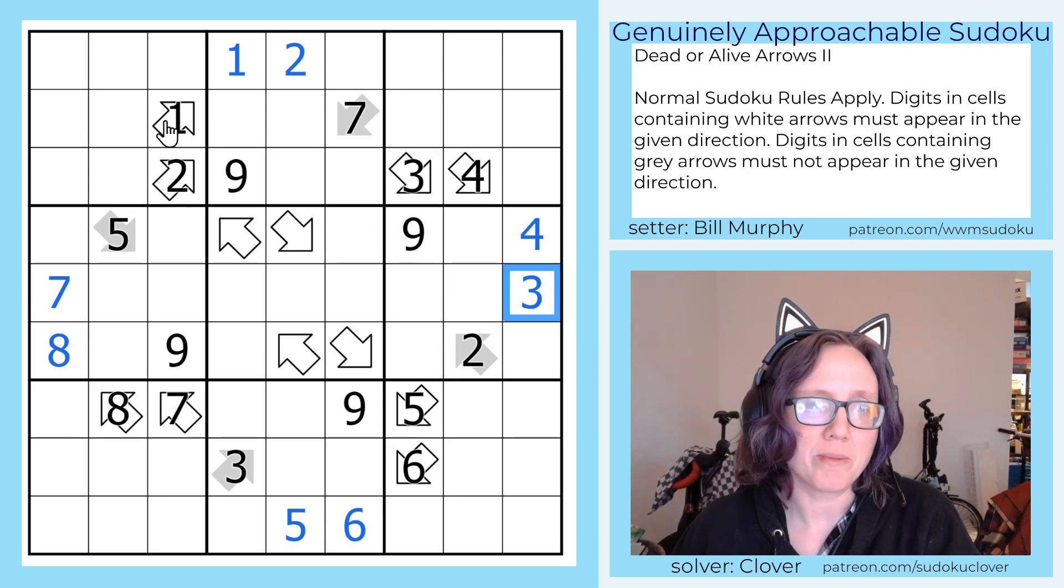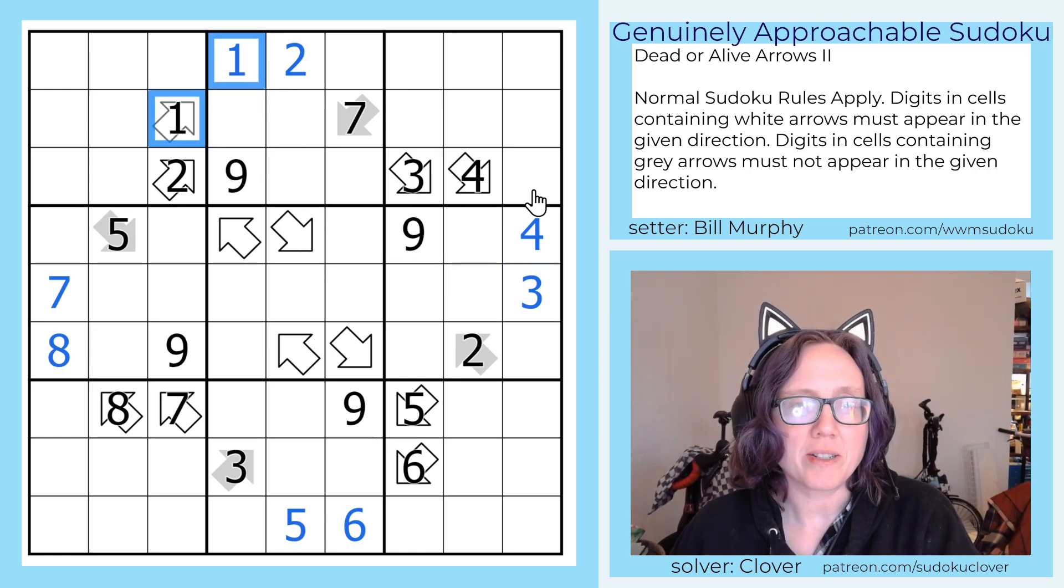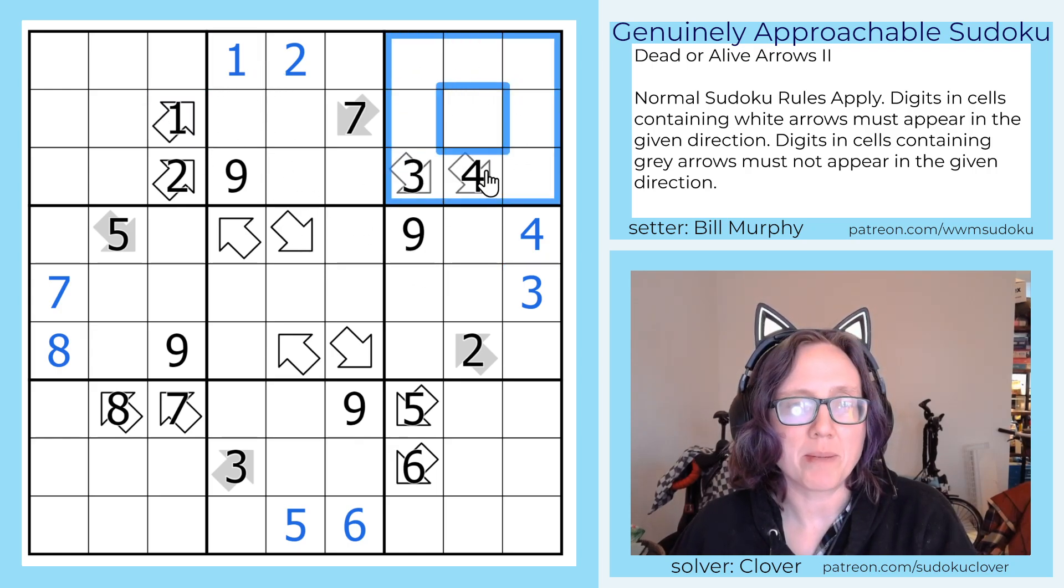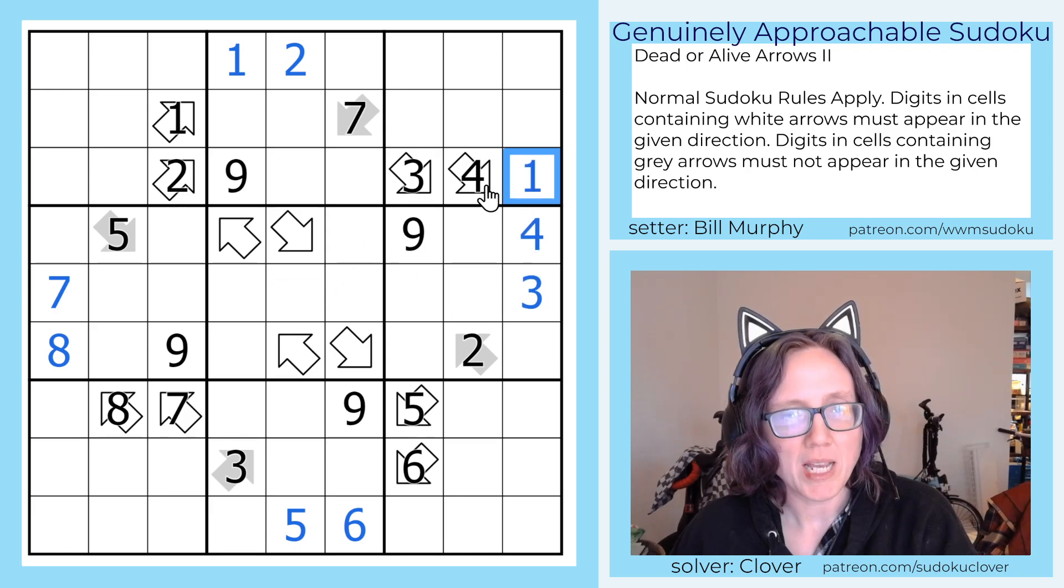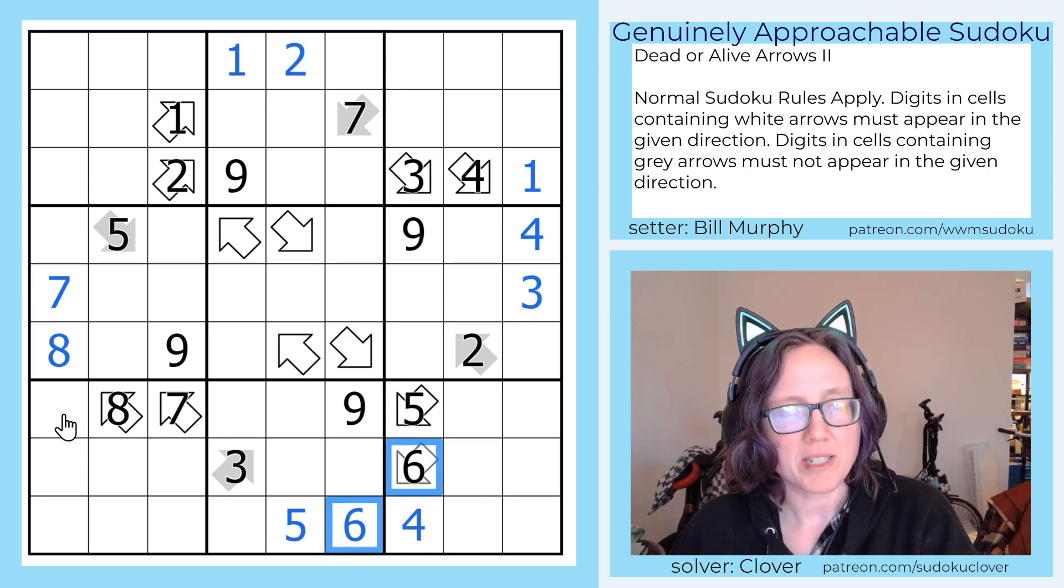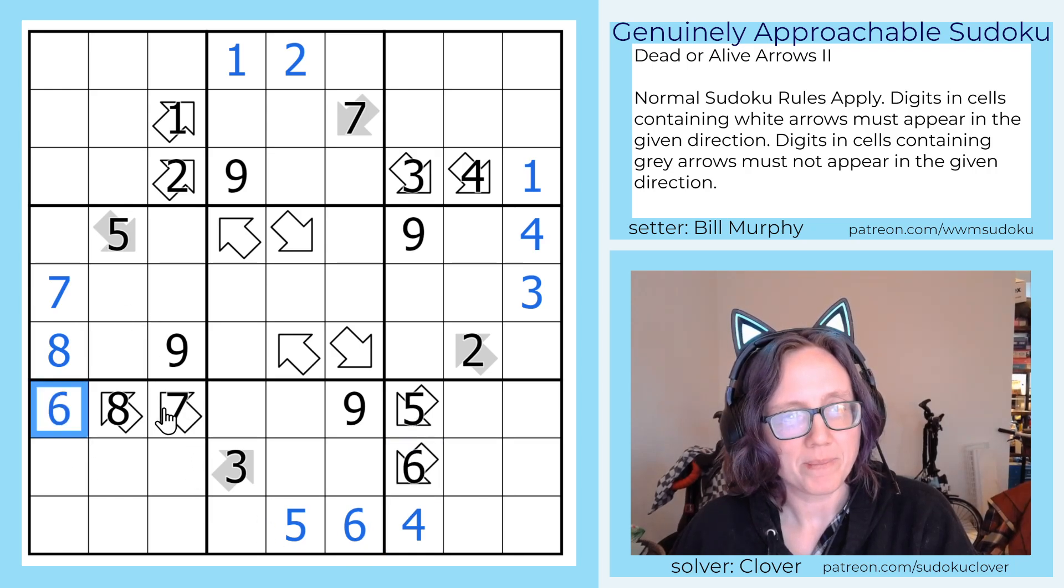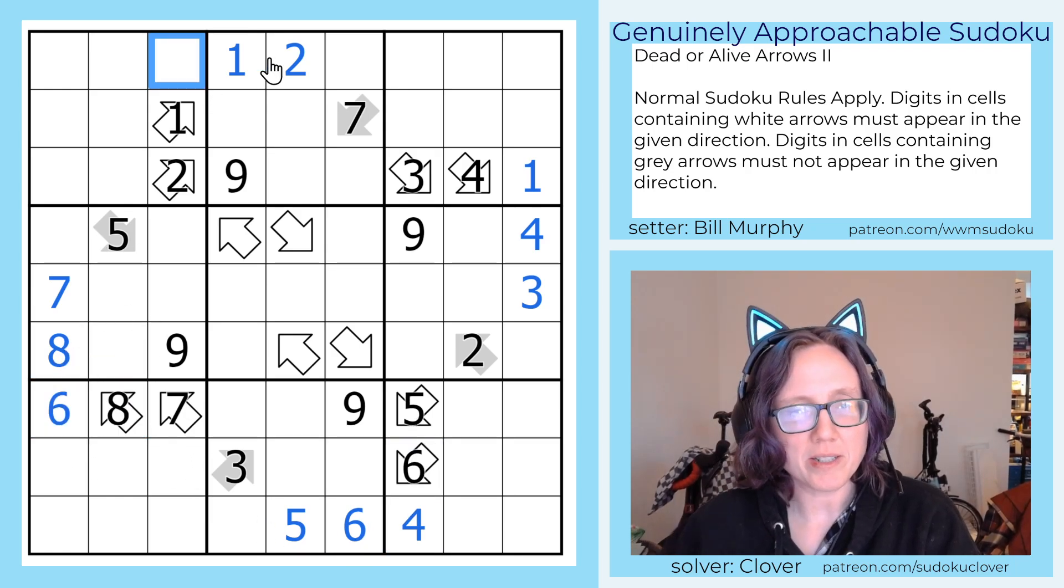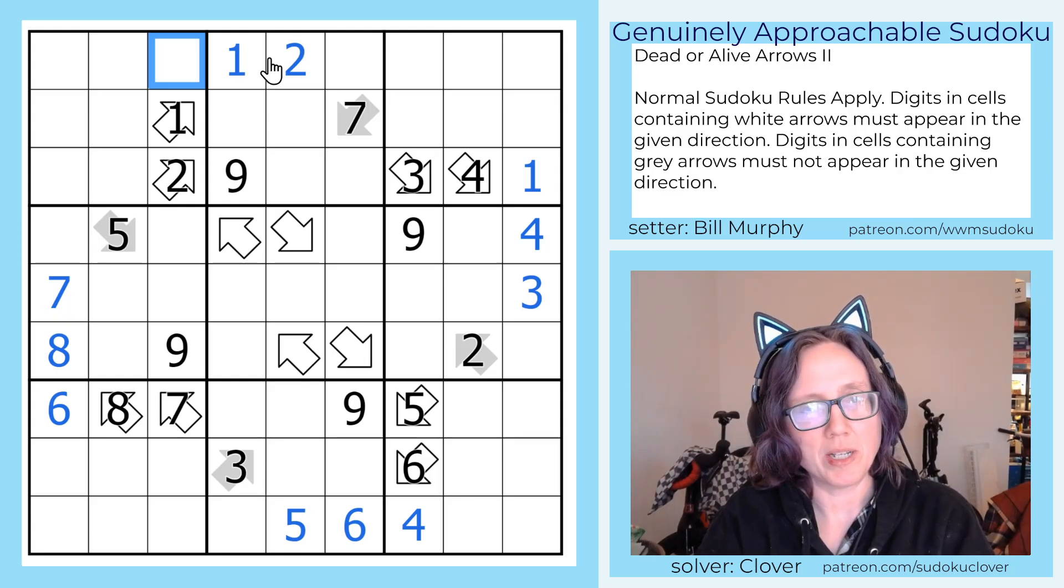Now we're going to do a bit of Sudoku. We have 1s here and here, so the only position for 1 in this top right region is there. We have 4s here and here, so the only position for 4 there is right there. We have 6s here and here, so 6 has to go there. And we have 8s here and here, so 8 has to go there.